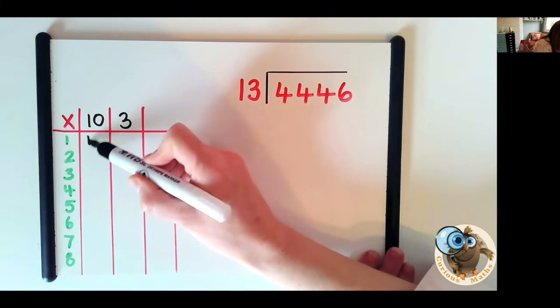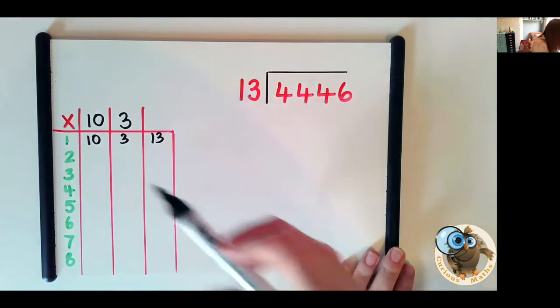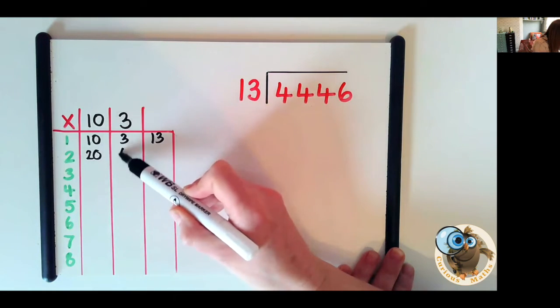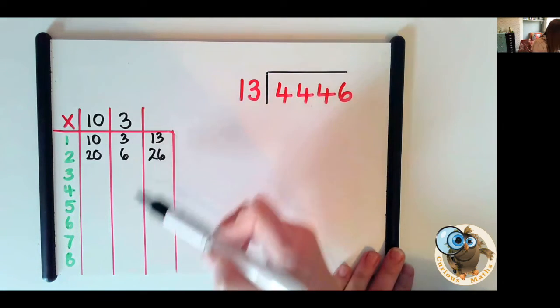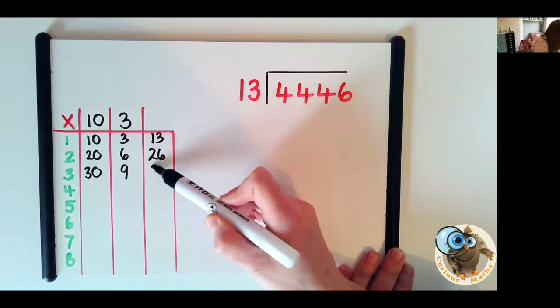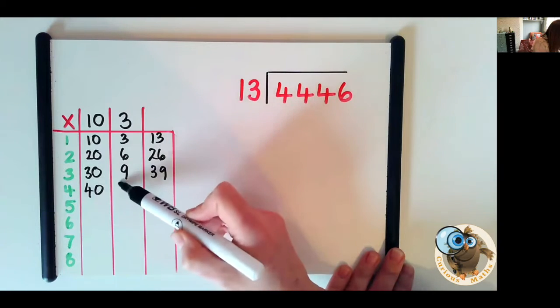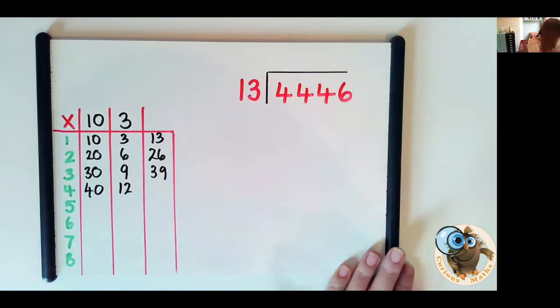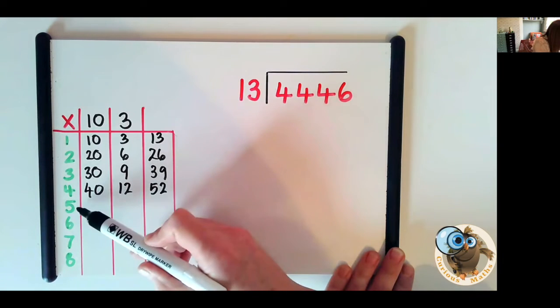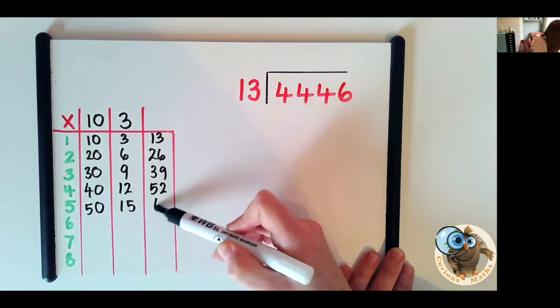So we know one 10 is 10, one 3 is 3, our total is 13. 2 lots of 10 is 20, 2 3s are 6, 20 add 6 is 26. 3 10s are 30, 3 3s are 9, that's 39. 4 10s are 40, 4 3s are 12, 40 plus 12 we can do 40 plus 10 which is 50 plus 2 more. 5 times 10 is 50 and 5 3s are 15 that gives us 65.